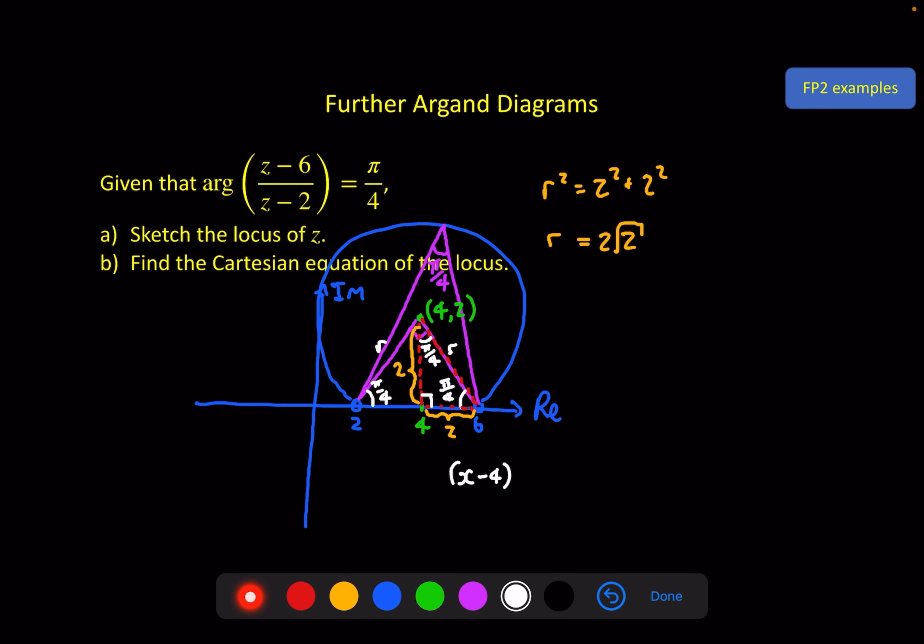Now I have all the information I need to write the circle equation. (x - 4)² + (y - 2)² must equal the radius squared, which is 8. Of course, because we only want part of this circle, we do need to be careful to limit this. In this case, the y coordinate must be greater than 0.